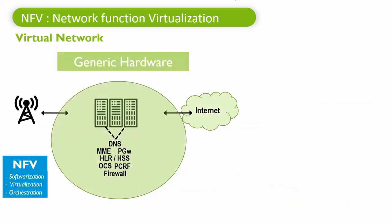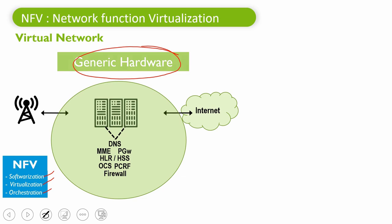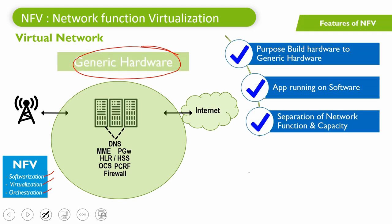Now let's understand what NFV is and how NFV solves these issues. NFV stands for Network Function Virtualization, and it does three things: softwareization, virtualization, and orchestration and automation. NFV replaces costly, dedicated, purpose-built hardware with generic servers that use software to provide a bunch of different virtualized network functions — we call them VNFs. Virtualization is all about software packages that perform a specific function, called a VNF or Virtual Network Function.